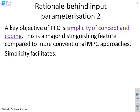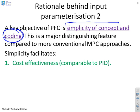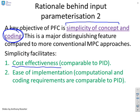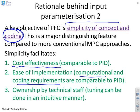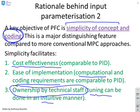A key objective of PFC, which distinguishes it from other predictive control algorithms, is a focus on simplicity — both of the concept and of the coding. This is a major distinguishing feature. If we can keep everything simple, it helps with cost effectiveness: we can keep cost down and make it comparable with PID. We can make the implementation much simpler, and the computational and coding requirements may also be comparable to PID. By keeping things simple, it makes it a lot easier to give ownership to technical staff — we don't need to hire an expensive consultant. Tuning can also be handled in a more intuitive manner.